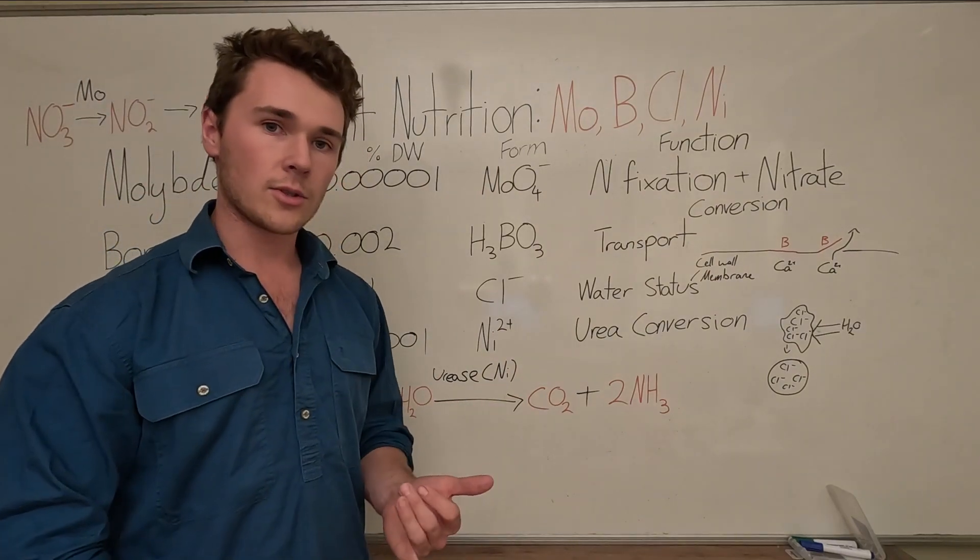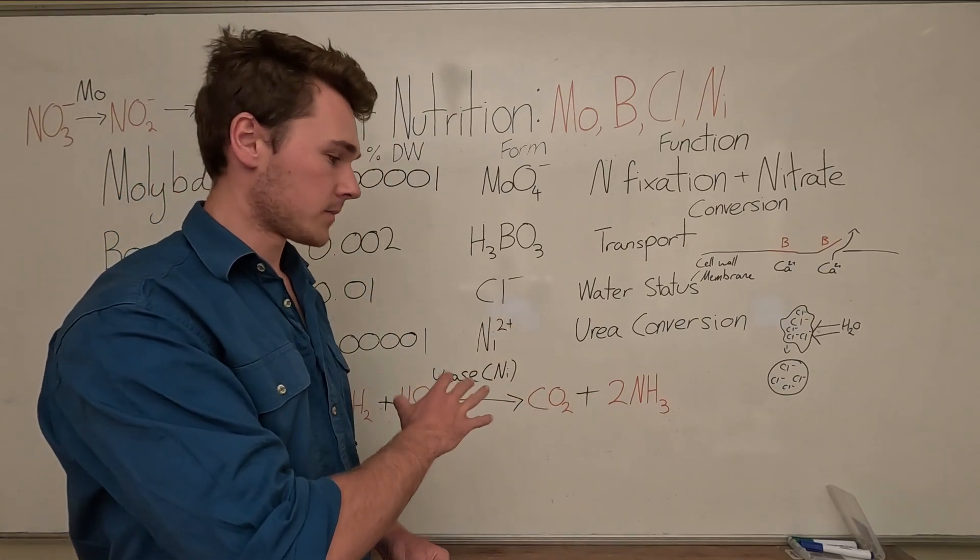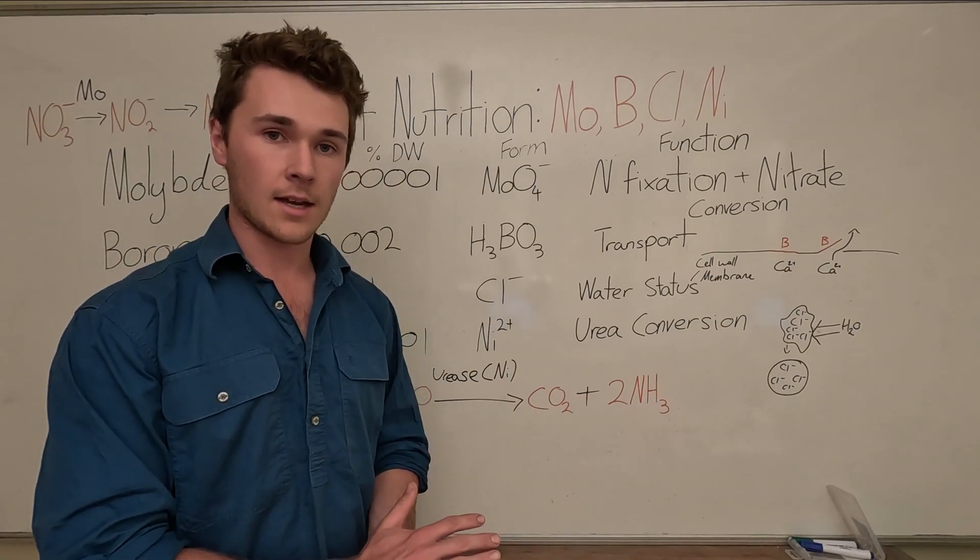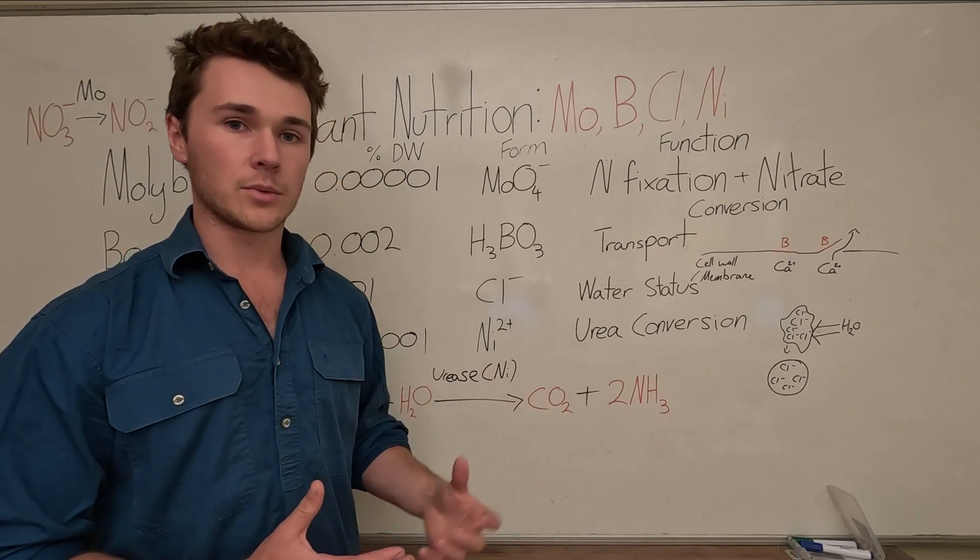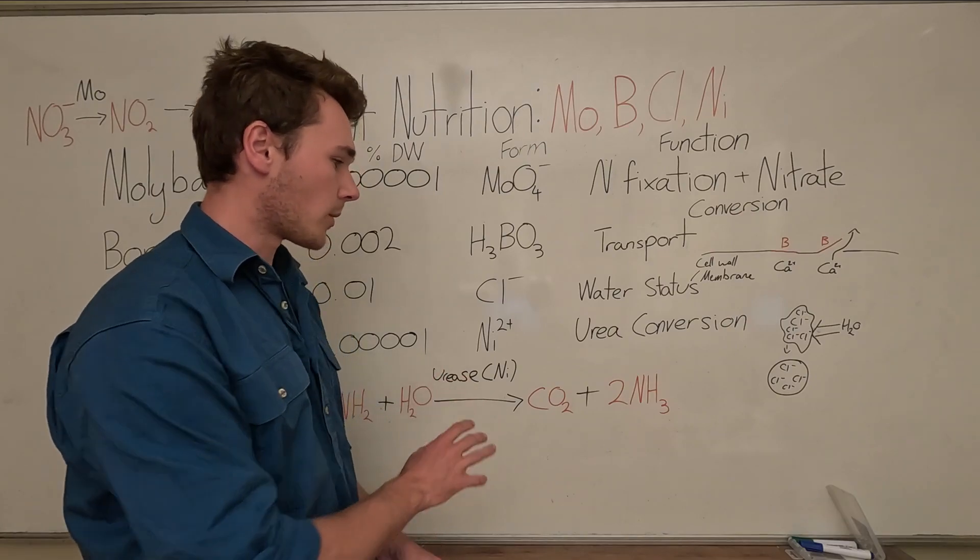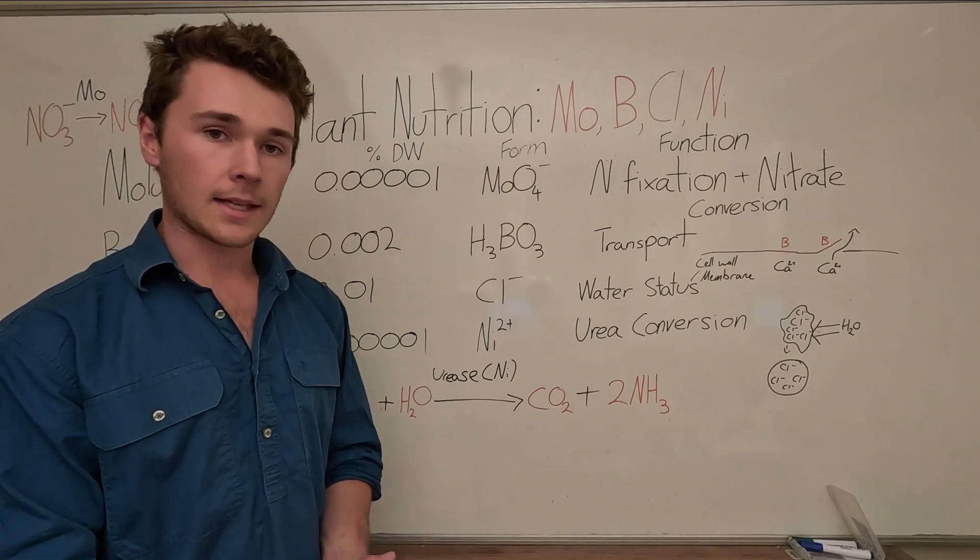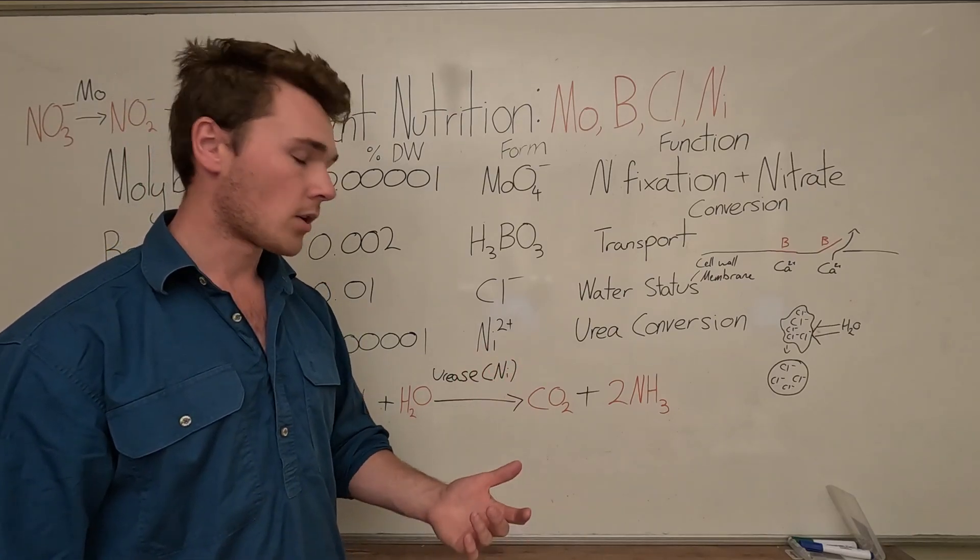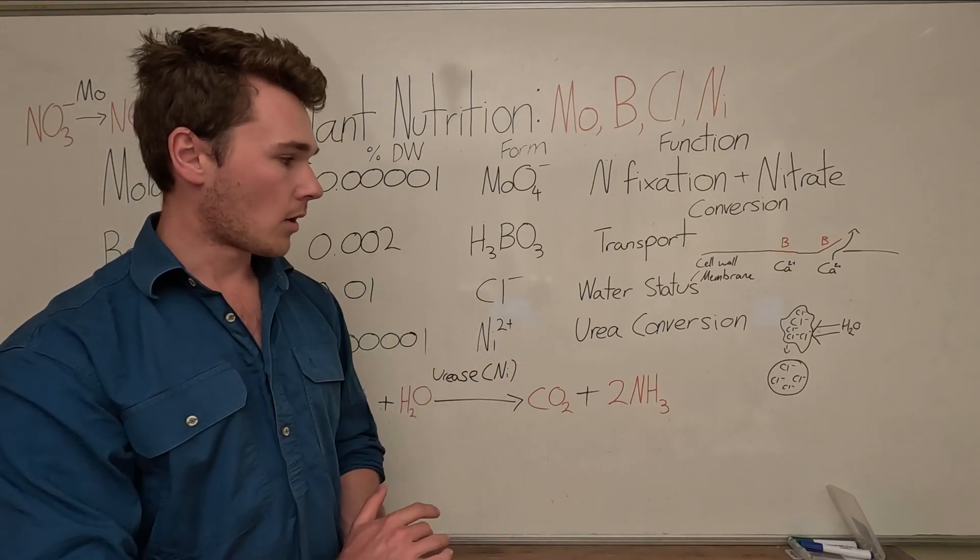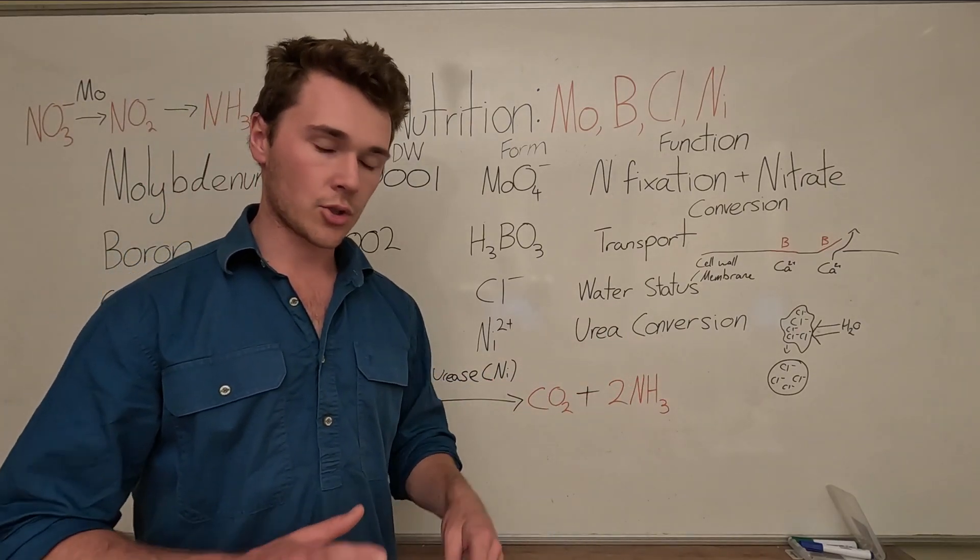What this means for our production system is that if we're using a lot of urea as our source of nitrogen, we're going to make sure we have nickel applied to our plant as well. Typically it's not too much of a problem and there's a lot of nickel in our soils, but it might not be available to our plant. You can actually get testing done on our plants to make sure that they have sufficient amounts of nickel. If you find out that your plant doesn't have sufficient amount of nickel, you can then apply that as a foliar spray.